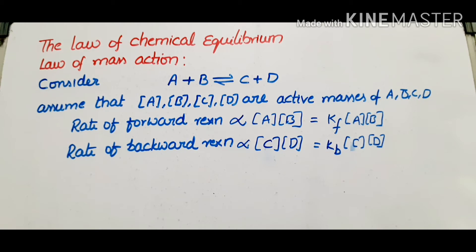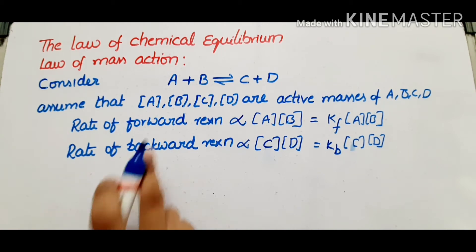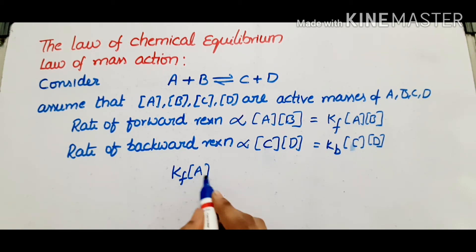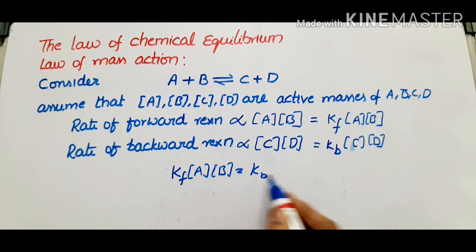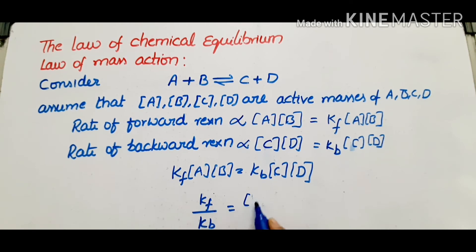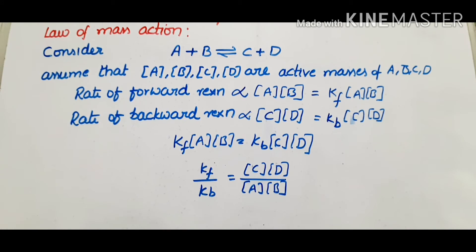At equilibrium state, the rate of forward reaction is equal to the rate of backward reaction. So Kf into [A] into [B] equals Kb into [C] into [D]. By cross multiplication, this can be written as Kf by Kb equals [C] into [D] divided by [A] into [B]. This ratio Kf by Kb is written as Kc.